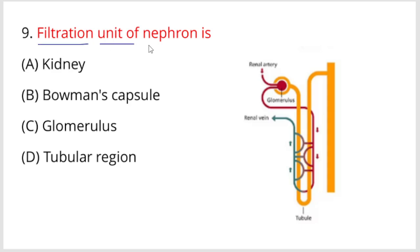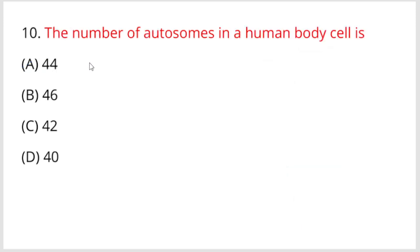Next, filtration unit of nephron is? Nephron has a filtration unit. Nephron is in the kidney. Option A, kidney is your right answer.